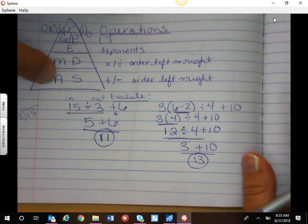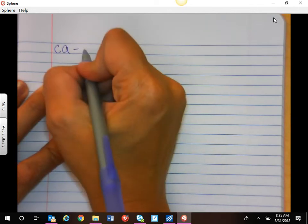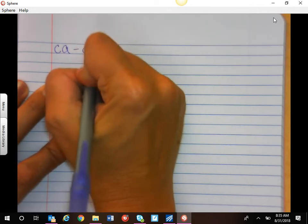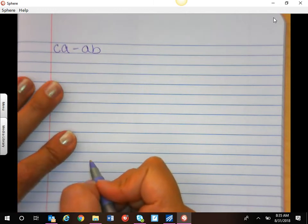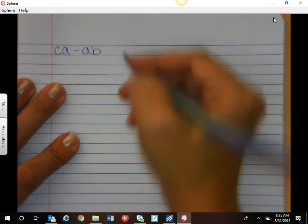Now, sometimes we're going to throw some variables in there, and we did a little bit with this. You're not going to have to do this today, but I want you to be aware. I gave you CA minus AB. Remember, letters next to each other mean multiply. Well, that's great, but Mrs. Ray, what are those letters representing?